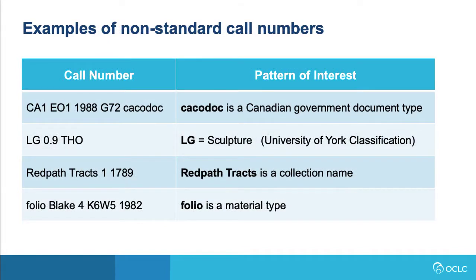Here are some examples of non-standard call numbers and patterns of interest within them. In the first case, we see there's a suffix which identifies that item as being a Canadian government document. In the second case, a prefix which identifies a subject in a local classification scheme. In the third case, a prefix which identifies this as a collection. And in the fourth case, a prefix that identifies this as a material type.